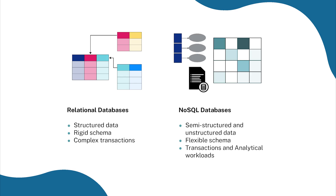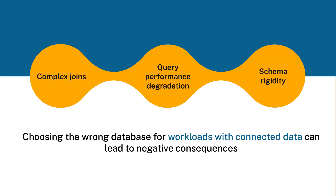Over the years, traditional databases and even modern NoSQL databases have been great for operational and transactional workloads. But enterprises have to deal with complex connections that span various aspects of their operations, and choosing the wrong database can lead to negative business consequences — especially if you're dealing with highly connected data. Traditional databases do not store relationships natively and need to use joins or application-level logic.